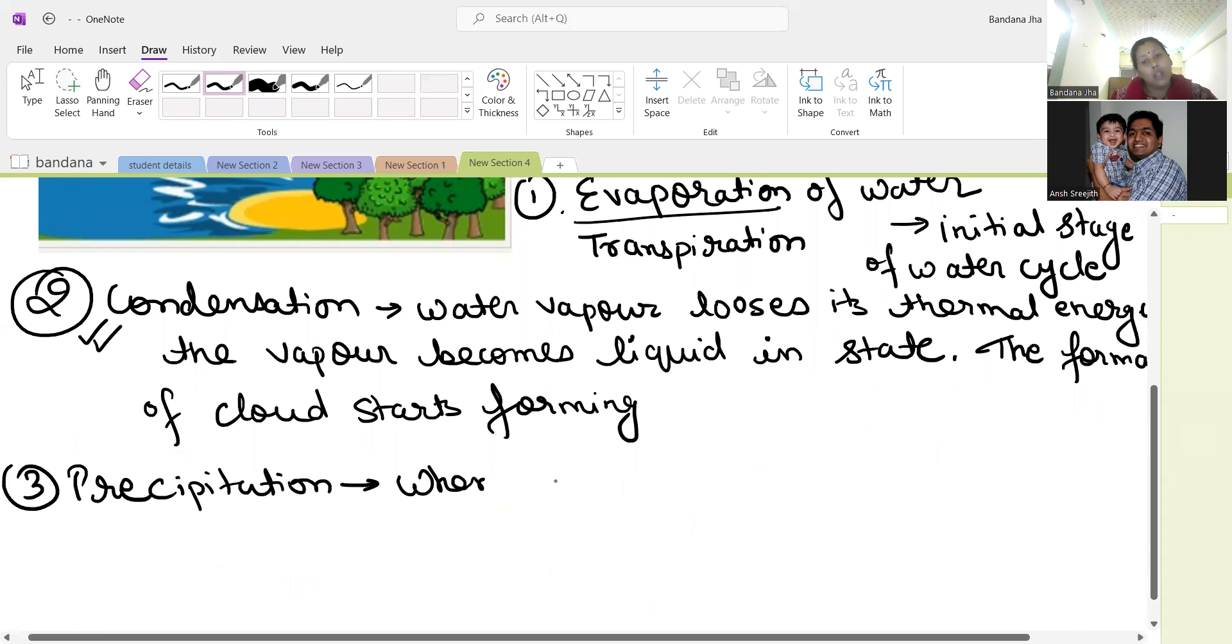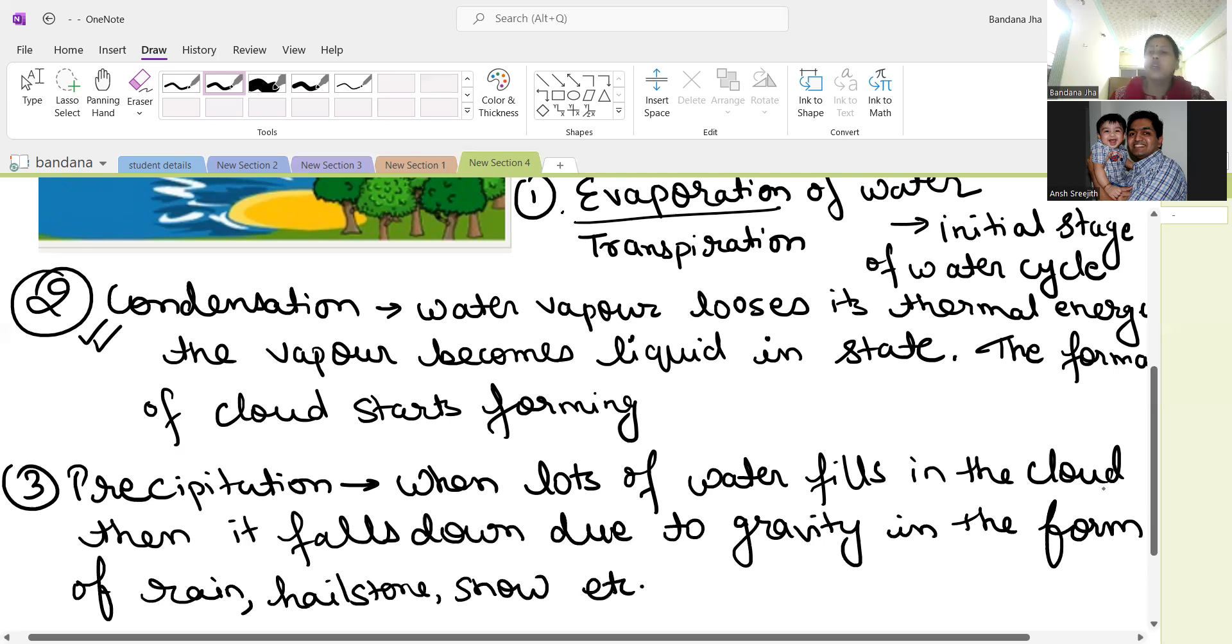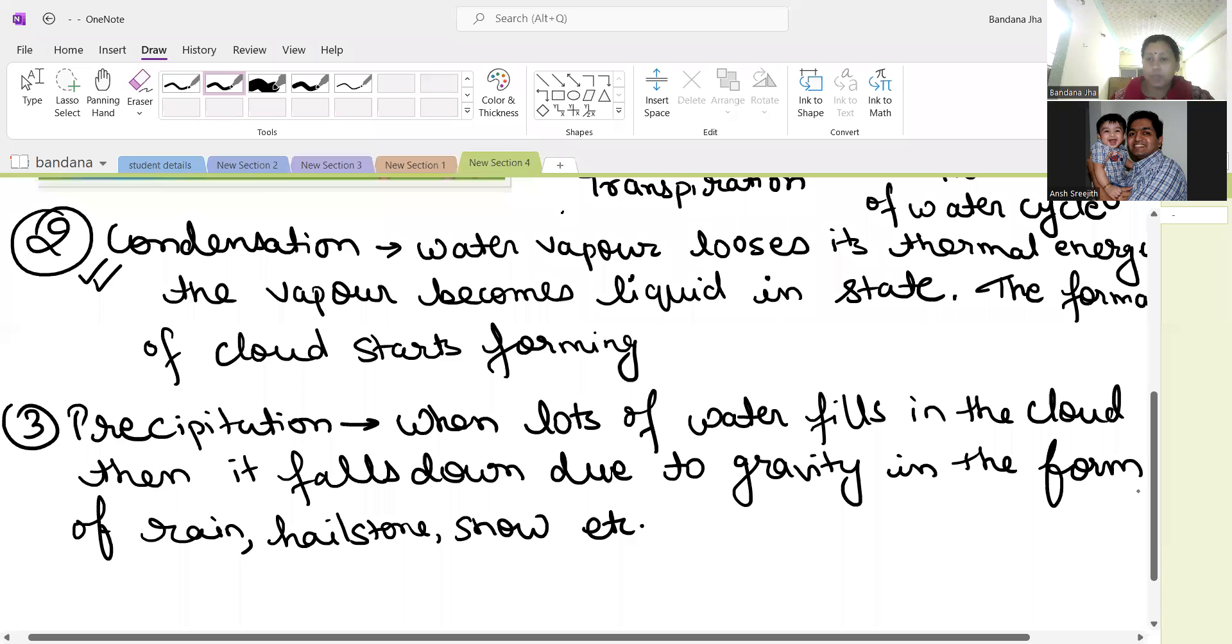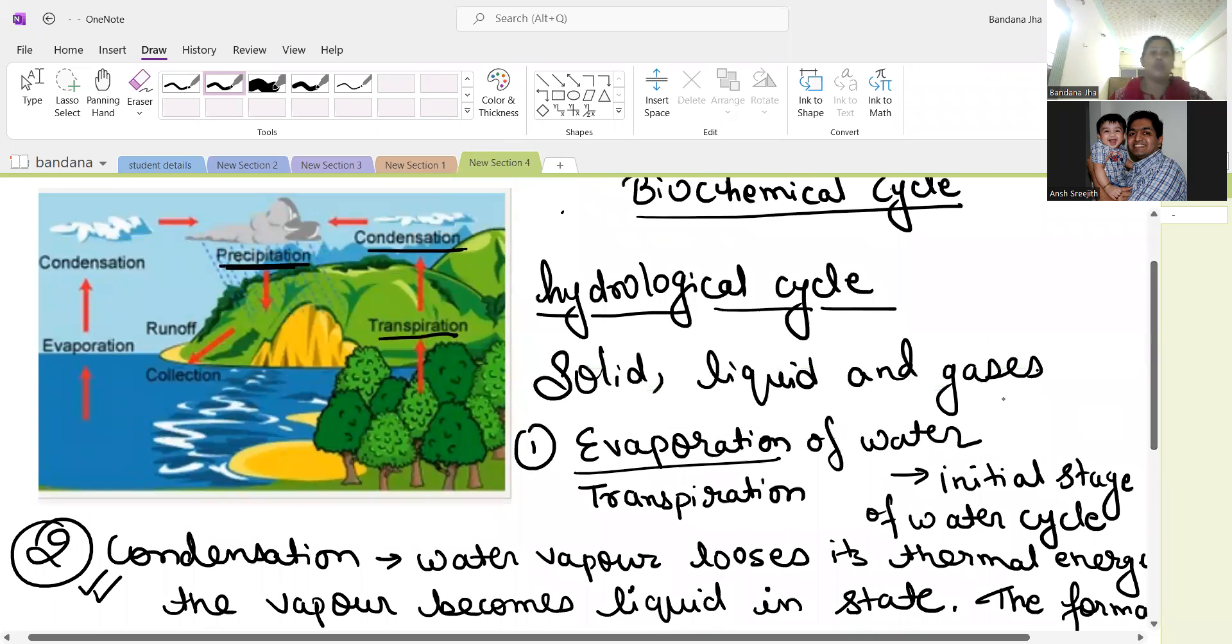Precipitation - when lots of water fills in the cloud, then it falls down due to gravity in the form of rain, snow. Nowadays we can see acid rain also. Colorful rain also we can see.